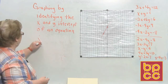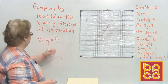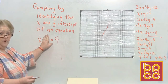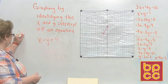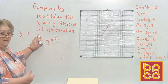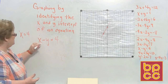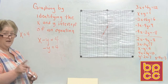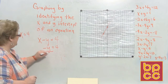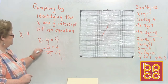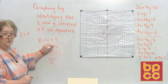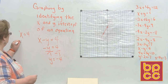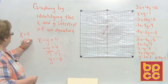Next: x minus y equals 4. Cover the y and x equals 4, so the x-intercept is 4. For y, covering the x gives negative y equals 4. Divide by negative 1 on both sides — negative into a negative is positive y, negative into a positive is negative 4. So the y-intercept is negative 4.